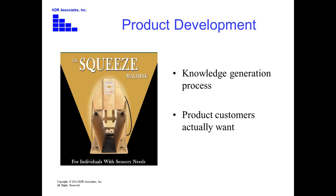We're looking at the squeeze machine as the model to carry this forward. The squeeze machine, for those not familiar with it, is Temple Grandin's design for giving an individual a hug when they need it to reduce anxiety. In autistic people, being touched by others raises anxiety, yet a hug would help reduce it. She designed this squeeze machine about 25 years ago, and it works — it really calms people down. We embarked on a program to use the squeeze machine as a model for product development.